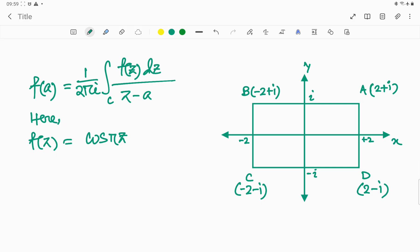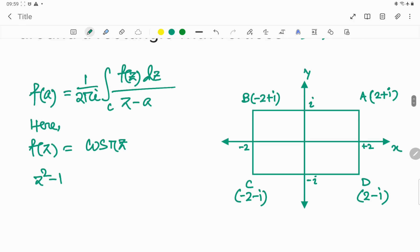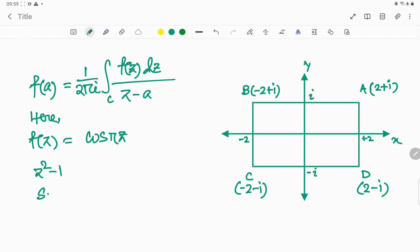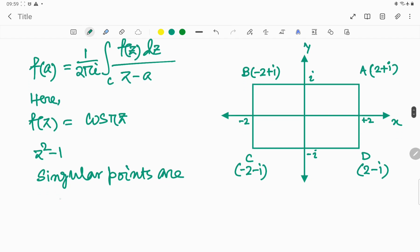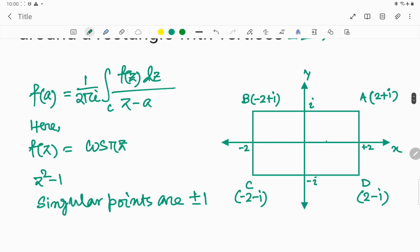The singular points: here you can see z² - 1, so we have the singular points z = 1 and z = -1. Obviously these points lie within this rectangle.